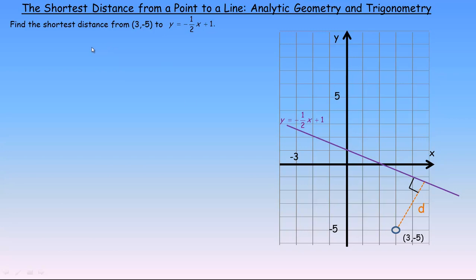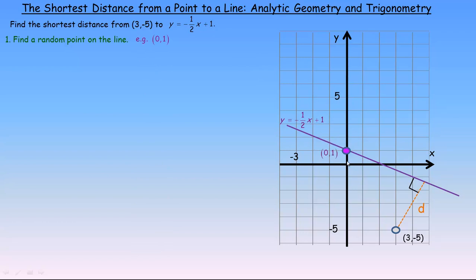The first step is to find a random point on the line, because we need to make a triangle to apply trigonometry. The line y = -1/2 x + 1 has a y-intercept of 1, so a convenient point is (0, 1). We then join that point to (3, -5), forming the triangle we will use trigonometry on to calculate the distance.